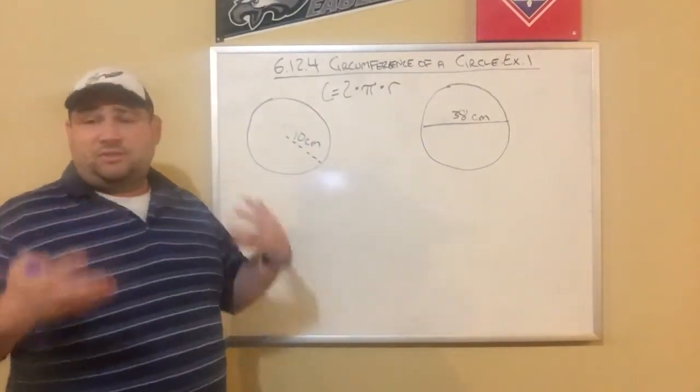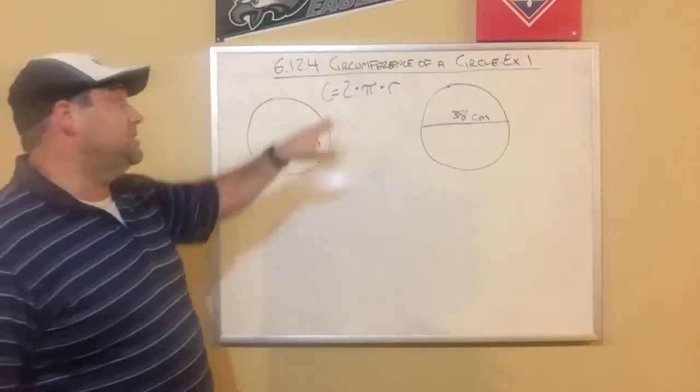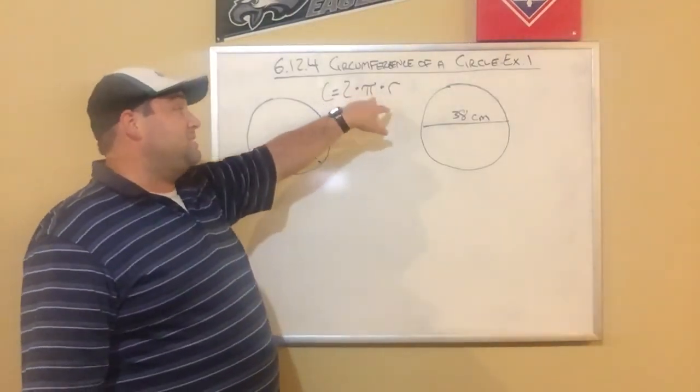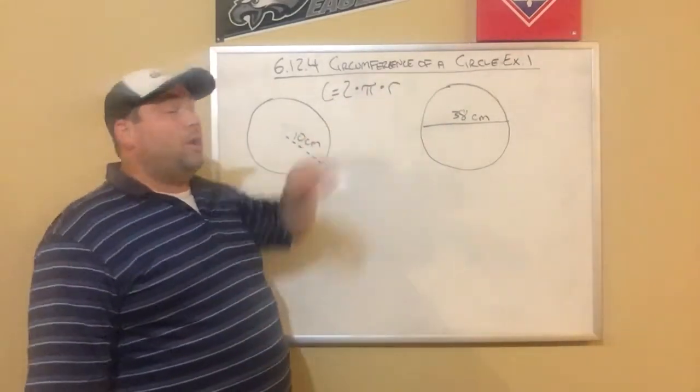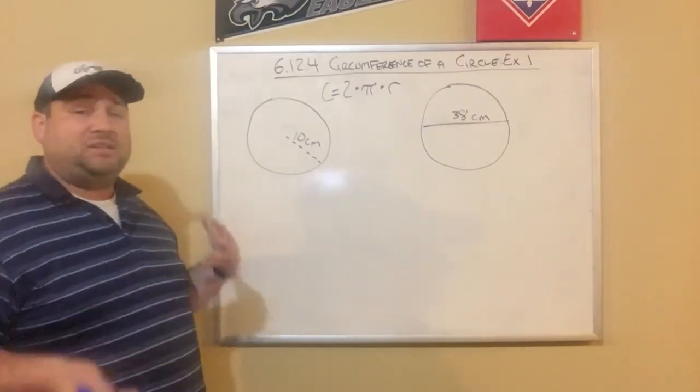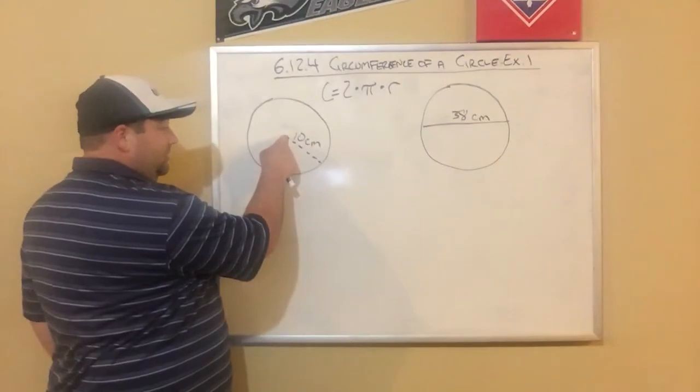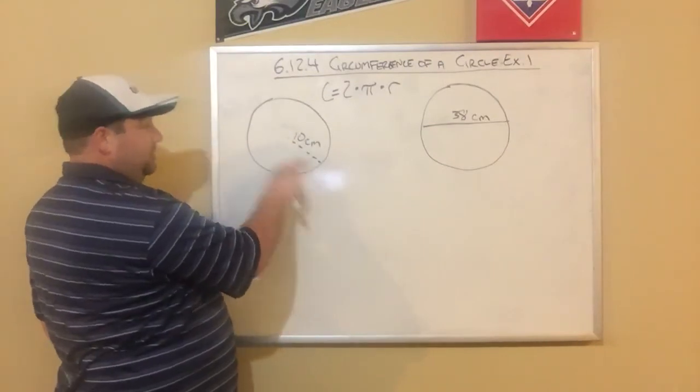And you're given the formula C, which stands for circumference, equals 2 times this symbol, remember, means pi times r. r stands for the radius. You should have learned from watching the videos yesterday that the radius of a circle goes from the middle of the circle to the edge of the circle.